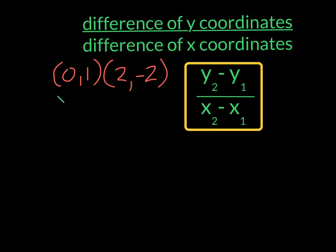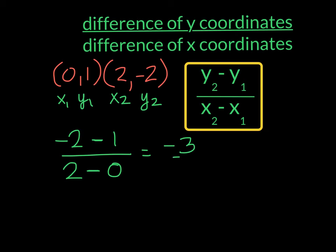Here we have our next example. This I'll label as x1, y1, x2, y2. And I'm going to take my y2, which is negative 2. I'm going to subtract from it my y1, which is 1. In my denominator, my x2 is 2. And I'm going to subtract from it my x1, which is 0. So in my numerator, I owe 2 and I owe 1, so I owe 3. And in the denominator, 2 take away 0 will give me 2. This will give us a slope of negative 3 over 2.